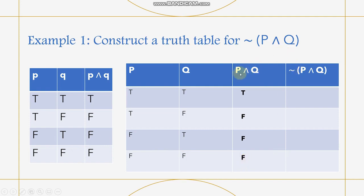So we have obtained the truth values of P∧Q. Next, we need to get the negation. The negation simply reverses the values — so the negation of true is false, and the negation of false is true. That's it. I hope you got it.